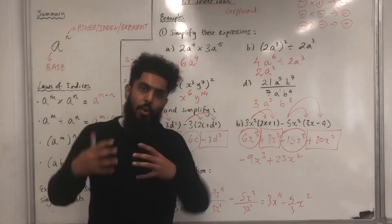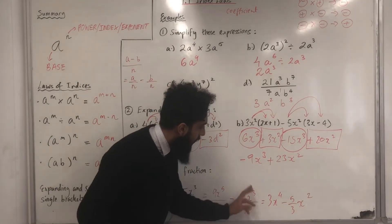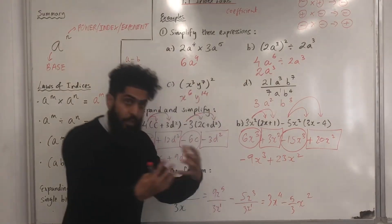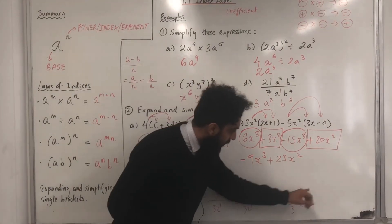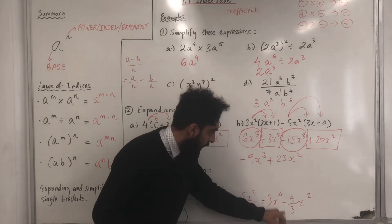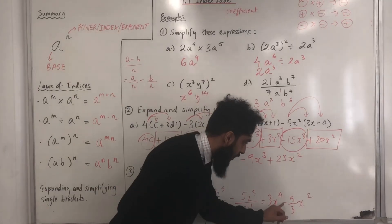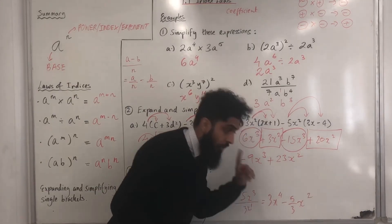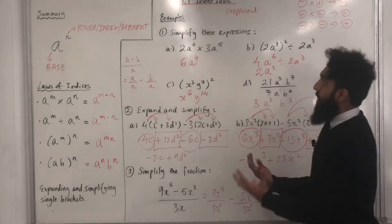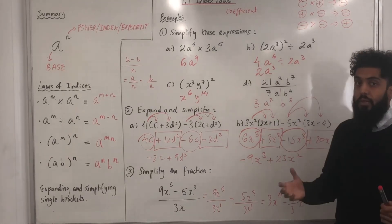What is the coefficient of the X to the power 4 term? It's just 3. What is the coefficient of the X to the power 2 term? In this case it is not 5 over 3, but minus 5 over 3 — don't forget that operation, very important. This completes section 1.1 index laws. If you found this video useful, please don't forget to subscribe.